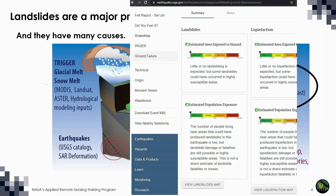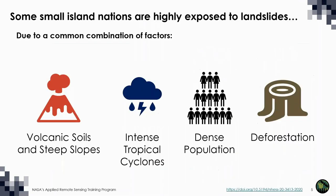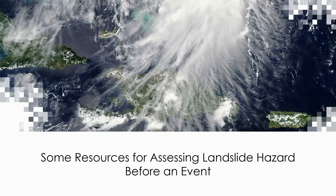However, global estimates of landslide hazard and exposure are available from the PAGER system at the USGS website. This PAGER system tells you about the hazard from earthquake-triggered landslides. Globally, landslides cause thousands of casualties and billions of dollars of damage every year. The exposure of individual countries varies widely, but recent research suggests that the populations of some small island nations are among the most frequently exposed to landslide hazard in the world, due to multiple factors, both human and natural. Fortunately, there are some tools that can help us understand landslide hazard before a rainstorm occurs. If preventive measures are taken early enough, some disaster damage can be mitigated.